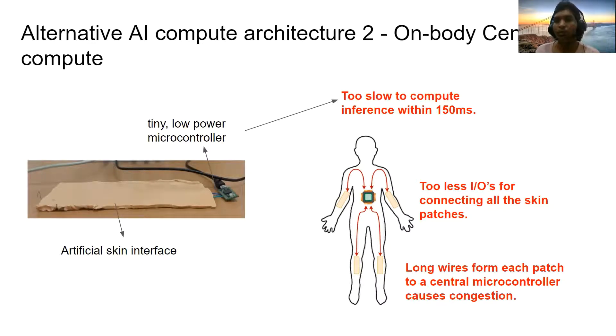As opposed to the alternative AI compute architectures that we have seen, AI on skin can provide faster neural network inference much lesser than 150 milliseconds and at the same time it can be easily scaled all across the body, powering up full body suits consisting of multiple artificial skin interfaces.